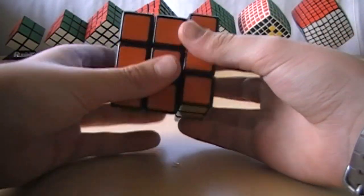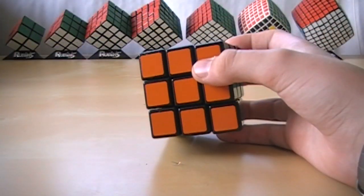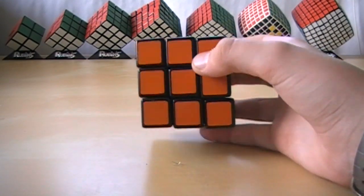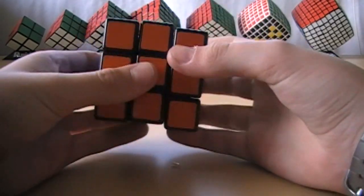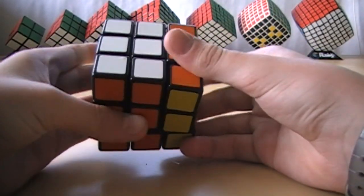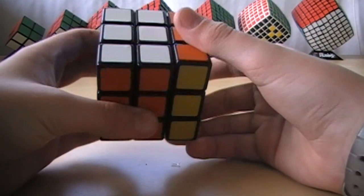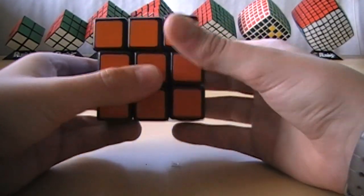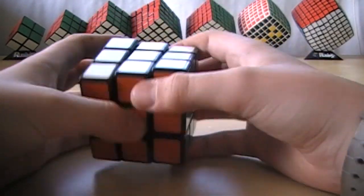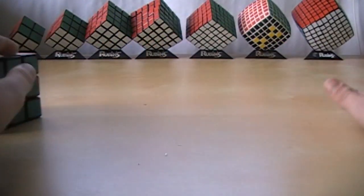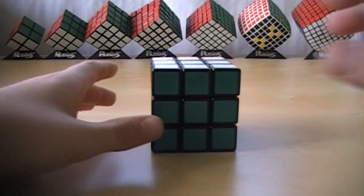If you saw my floppy cube unboxing, then you'll see I also got this one with it. It's actually pretty decent. It has okay corner cutting, kind of average. Backwards corner cutting is what you expect. Not very much, but we won't need any of that for what I'm doing with it.